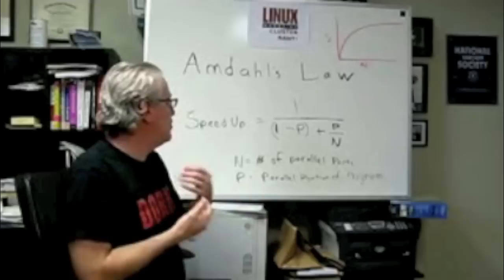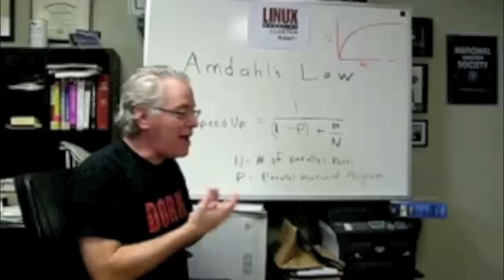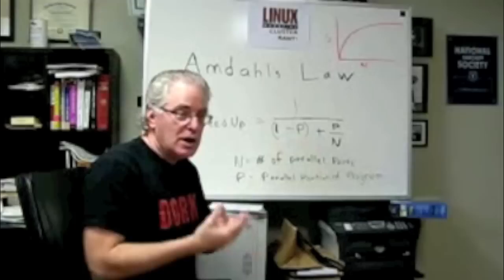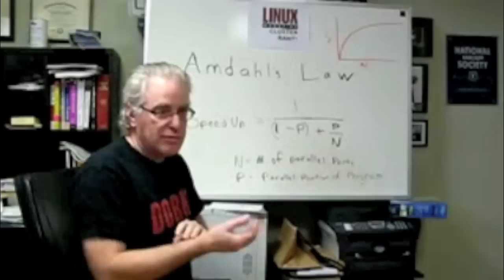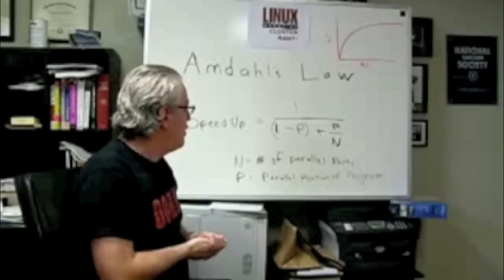So, what Amdahl's Law is saying is the speed up you can expect depends upon two major issues. One is p, the proportion of parallelism in your program, or concurrency, and the number of processors, or cores, what we want to call them, n.